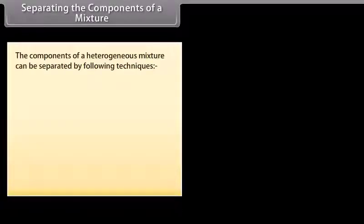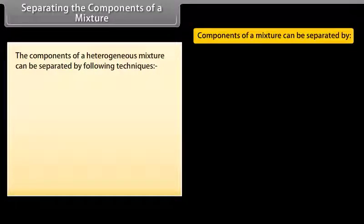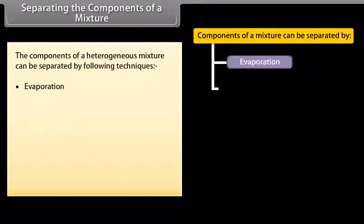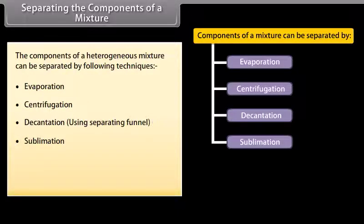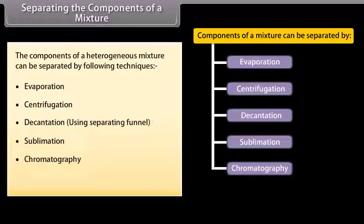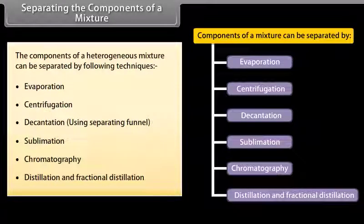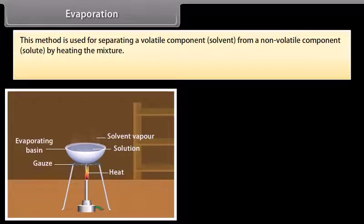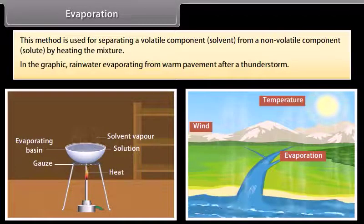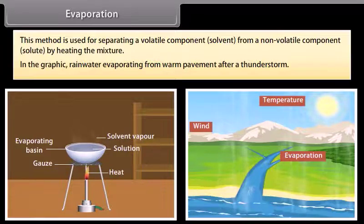Separating the components of a mixture: The components of a heterogeneous mixture can be separated by the following techniques: evaporation, centrifugation, decantation, sublimation, chromatography, distillation, and fractional distillation. Evaporation is used for separating a volatile component (solvent) from a non-volatile component (solute) by heating the mixture. An example is rainwater evaporating from warm pavement after a thunderstorm.